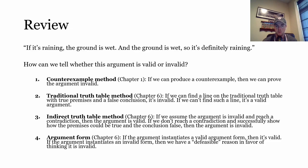We've also discussed the indirect truth table method, a shortcut method. We assume the argument is invalid — that there's a line with true premises and a false conclusion — and if we reach a contradiction, we know the argument is actually valid. On the other hand, if we don't reach a contradiction and can successfully show how the premises could be true and the conclusion false, then we know we've got an invalid argument.